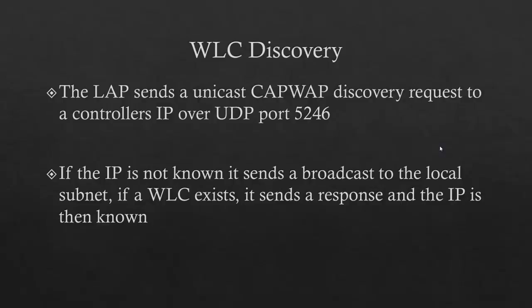How do you discover a wireless LAN controller? The lightweight access point when first turned on sends a unicast CAPWAP discovery request to the controller's IP over UDP port 5246 — make sure you write that down because it'll probably be a test question on the CCNA wireless exam. If the IP is not known, it sends a broadcast to the local subnet, and if a wireless controller exists, it sends a response and the IP is then known.